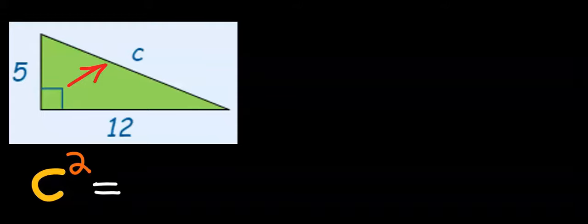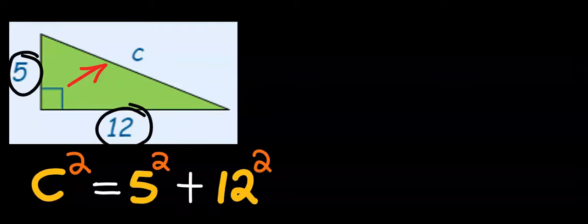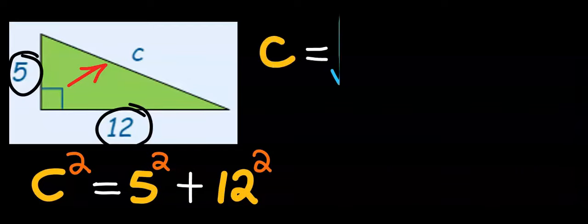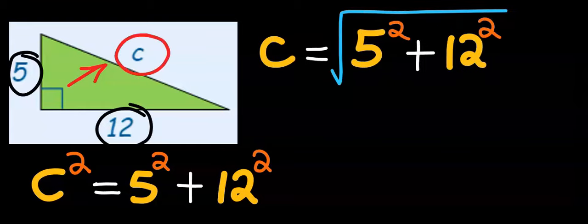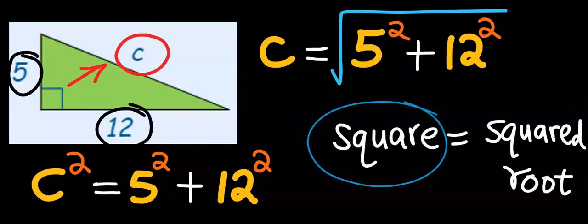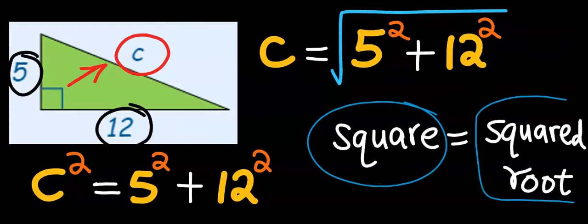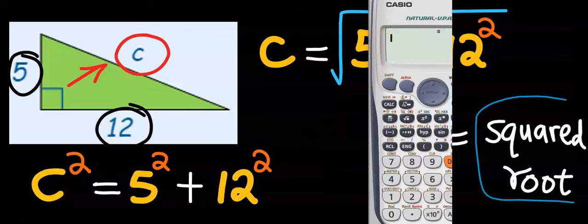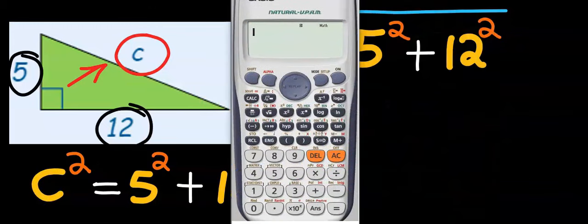The next step is to square each of the remaining sides. After squaring each of them, add them both together. Next, since we are looking for c², across the equal sign it becomes a square root. Using a calculator, we can finish this up.